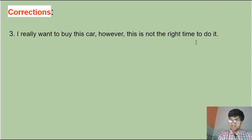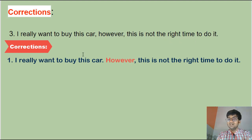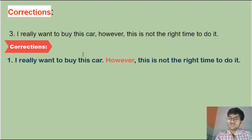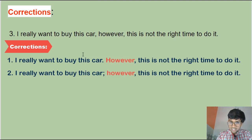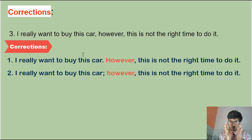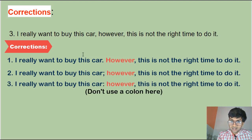Last example: 'I really want to buy this car, however, this is not the right time to do it.' Method one — use a period: 'I really want to buy this car. However, this is not the right time to do it.' When you use 'however' at the beginning of a sentence, you must use a comma after it. Method two — use a semicolon: both sentences are closely related, so: 'I really want to buy this car; however, this is not the right time to do it.'